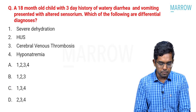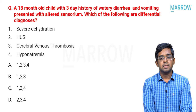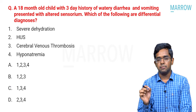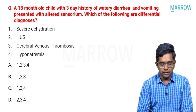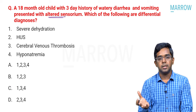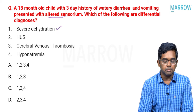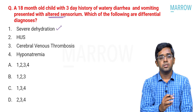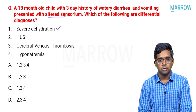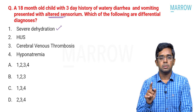Moving on to the second question: an 18-month-old child with a 3-day history of watery diarrhea and vomiting presented with altered sensorium. Which of the following are the differential diagnoses? We have a child with acute watery diarrhea and altered sensorium. First, can it be severe dehydration? Absolutely possible, because the characteristic feature of severe dehydration is extreme lethargy or altered sensorium, and the child will not accept anything orally. So severe dehydration is possible in this clinical setting.